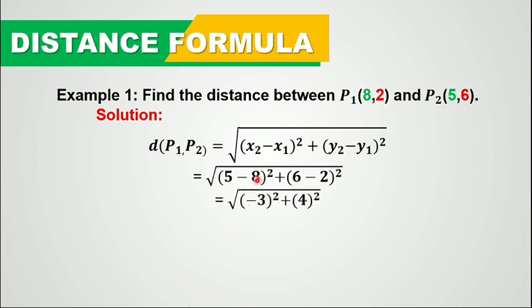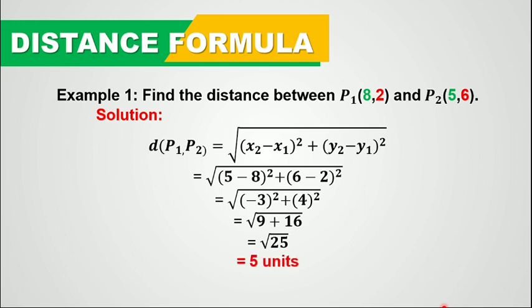So 5 minus 8 is negative 3, and 6 minus 2 is positive 4. Squaring them: negative 3 squared is 9, plus 4 squared is 16. So 9 plus 16 equals 25, and the square root of 25 is 5. Therefore, the distance between P1 and P2 is 5 units.